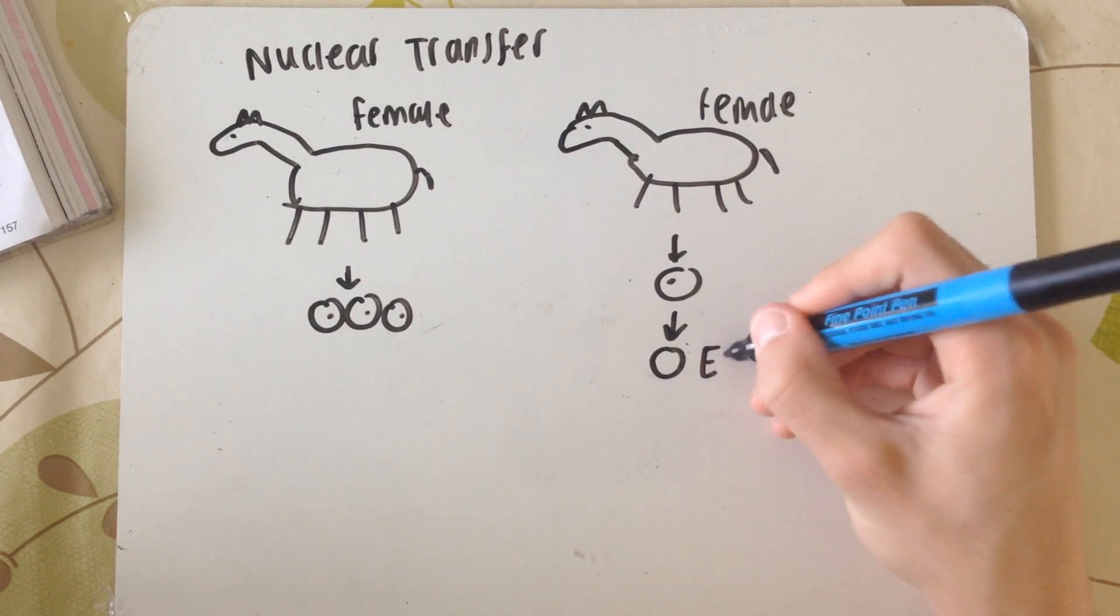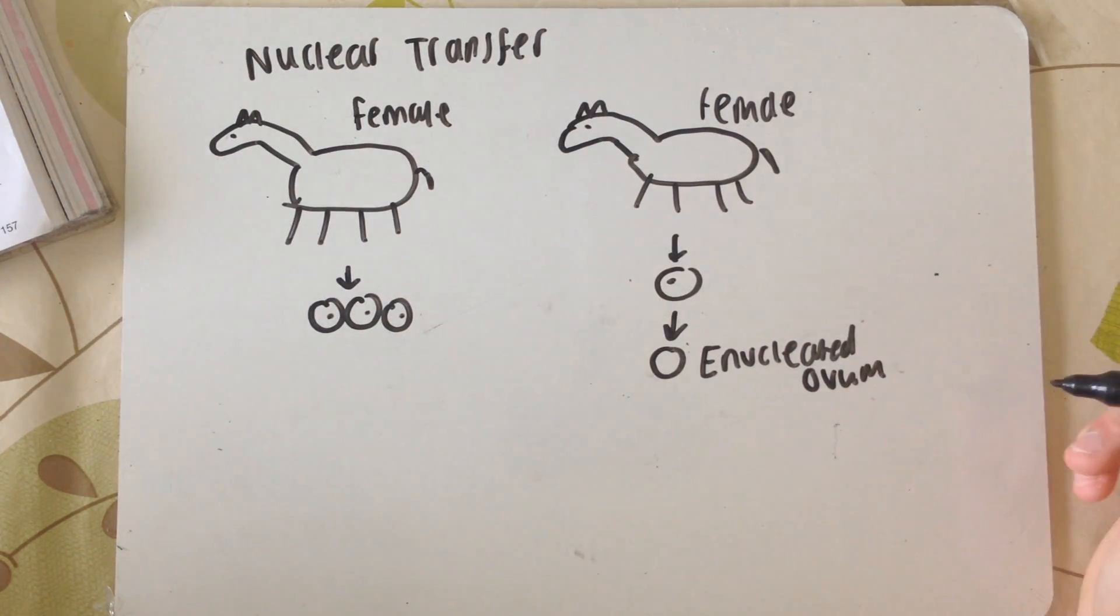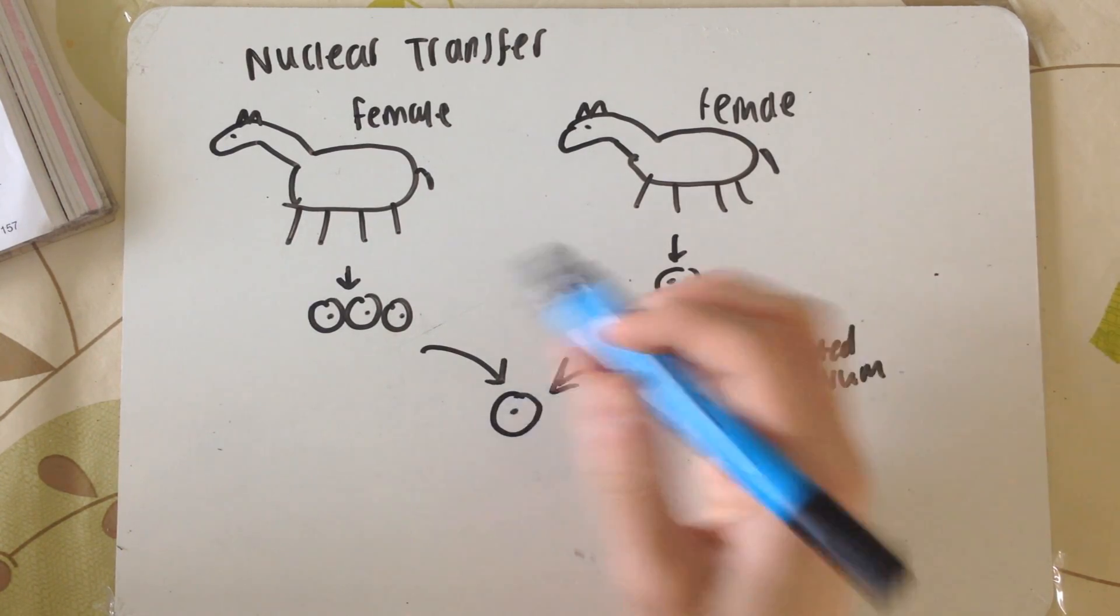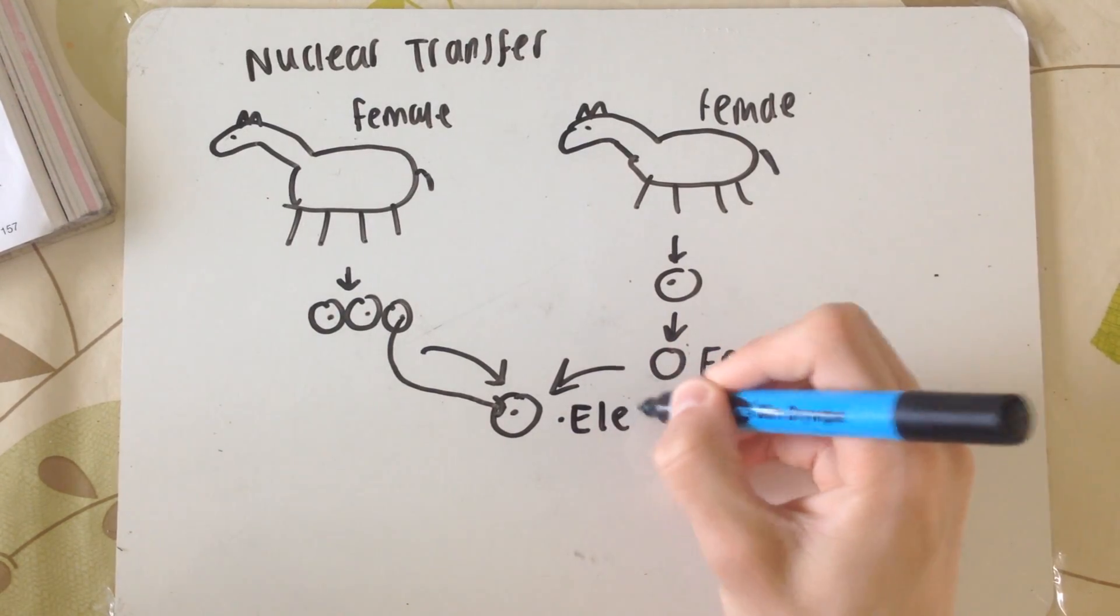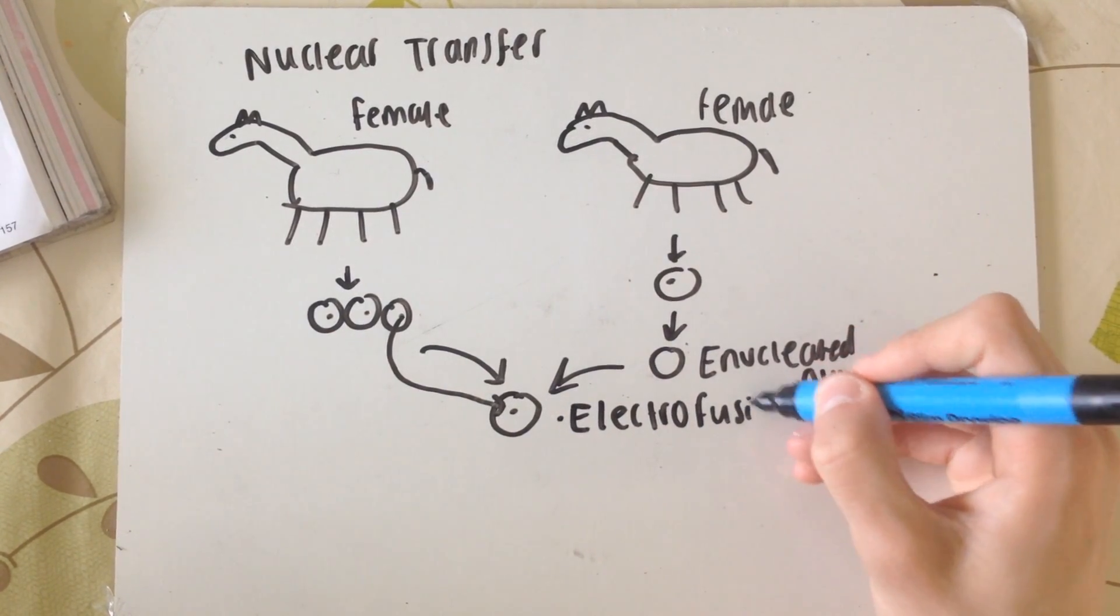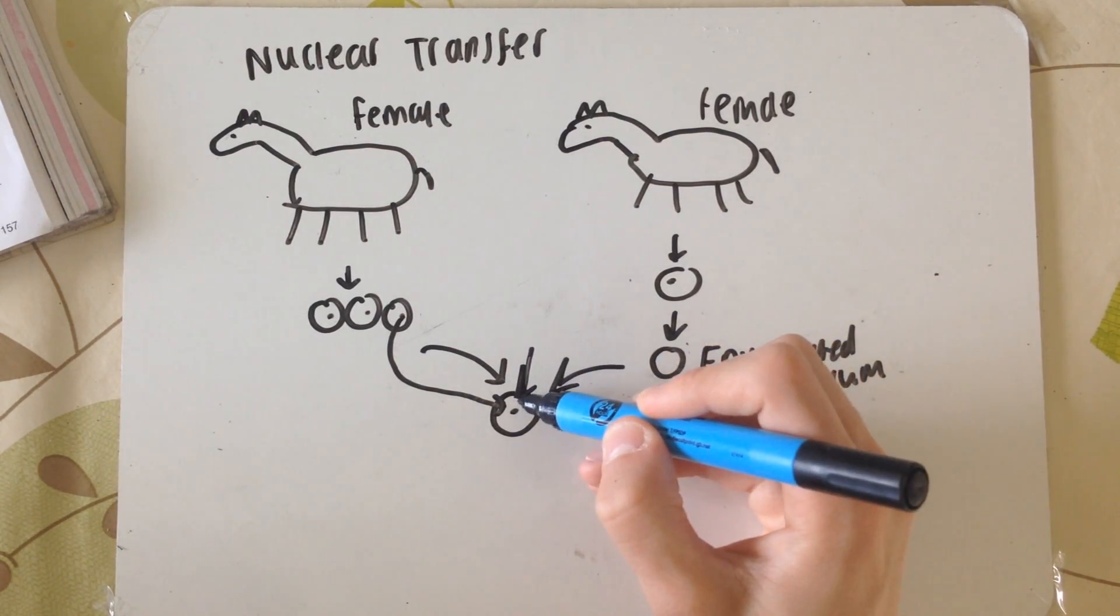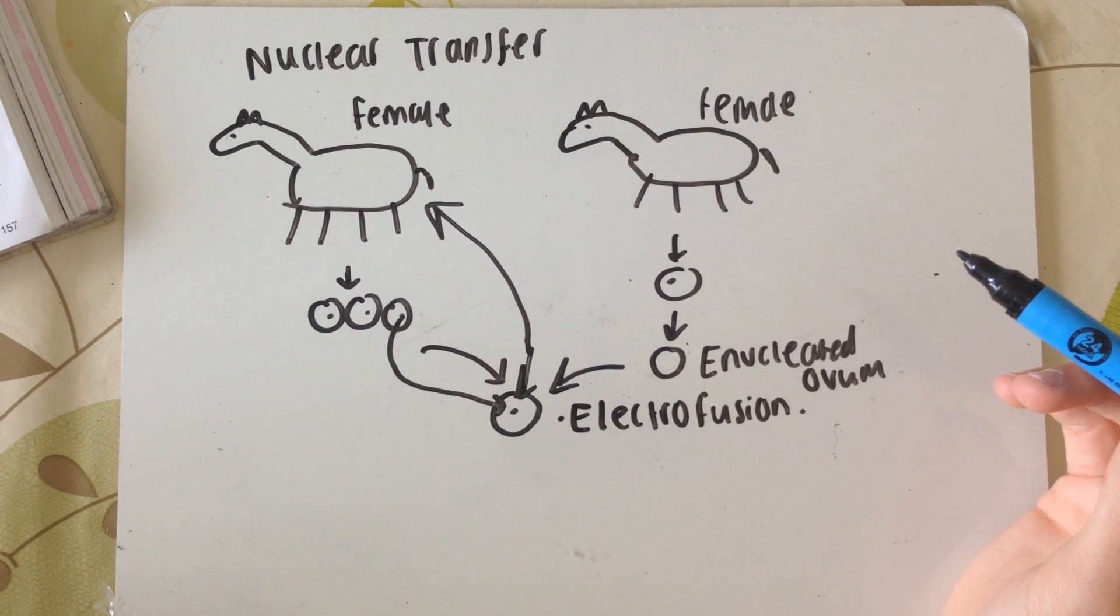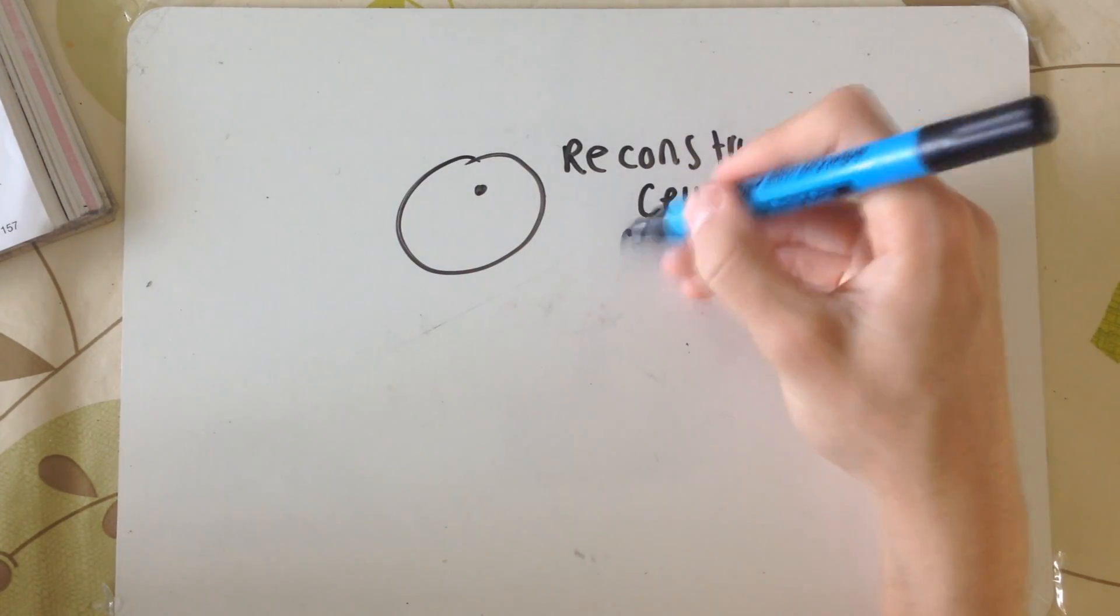Any cell can be taken from the female on the left, and we just need an ovum, an egg, from the female on the right. This ovum is enucleated, the nucleus is removed. The nucleus from one of the cells from the female we want to clone is transferred into the enucleated ovum. You now have a reconstructed cell. This is done by electrofusion. The nucleus of this egg belongs to the female we want to clone, therefore has the genetic information of the female we want to clone.